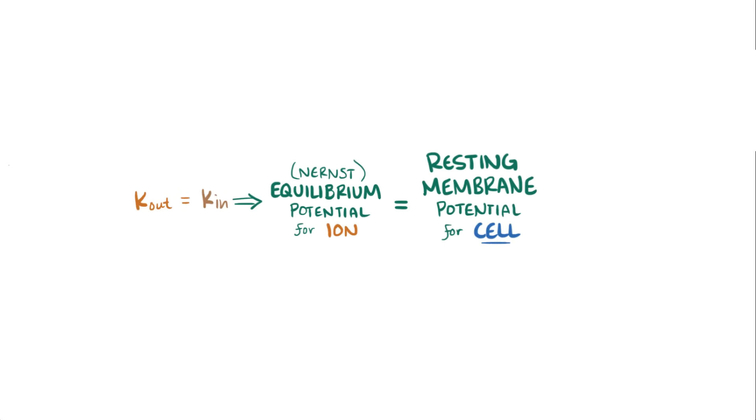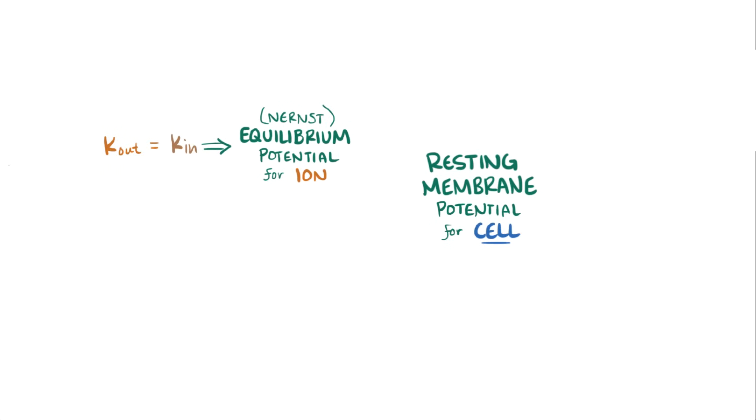In reality though, there are multiple ions that have concentration gradients that are permeable across the cell membrane, each of which has its own equilibrium potential.